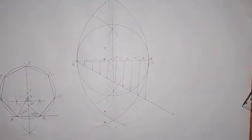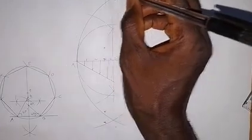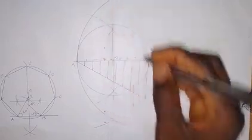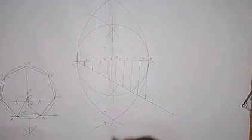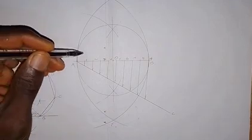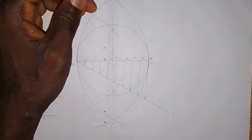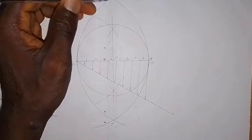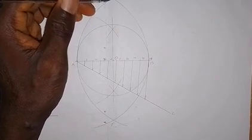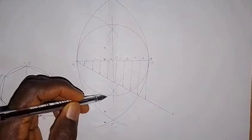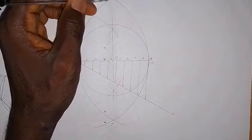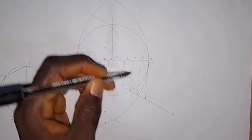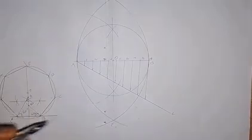The next thing we are going to do is draw lines from these intersection points. I'll call the upper intersection point D and the lower intersection point E. From point D, draw a line passing through point 2 and touching the circle. Then draw a line from D passing through point 4 and touching the circle. Then from D passing through point 6, and from D passing through point 8, each touching the circle.